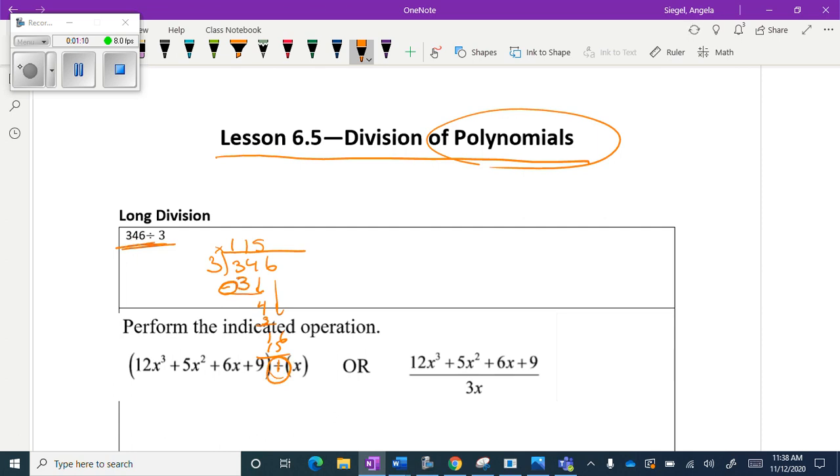So your teacher probably taught you to first of all just do like remainder 1. And then you got a little bit bigger and they're like, no, we're not going to do that anymore. We're going to turn it into a fraction. And so the way you turn it into a fraction is you take your remainder and you put it over this number. So my answer is 115 and 1 third. And so that's how we're going to treat these polynomials.